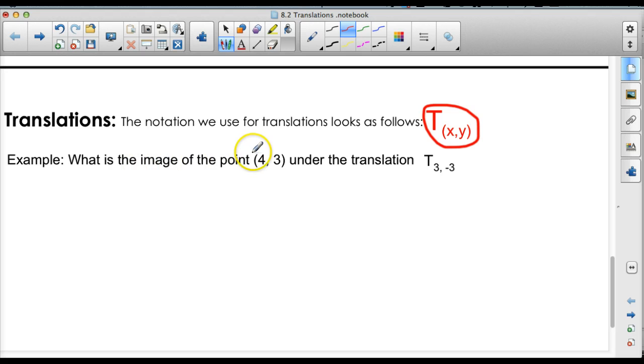It says, what is the image of the point (4, 3) under this translation? So using these numbers, we're going to change these numbers. So let's start with this one, right? So we have our X coordinate, which is 4. So this is the X value, right? And our Y coordinate, which is 3. Now, we come back over here. We're going to add 3 because it's a positive 3. So we're going to just do 4 plus 3. And our new point, our new X coordinate is 7.